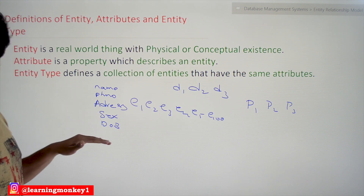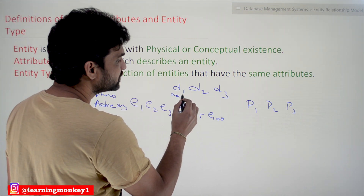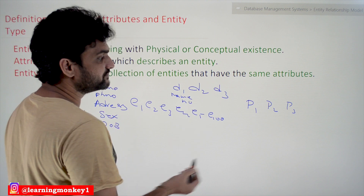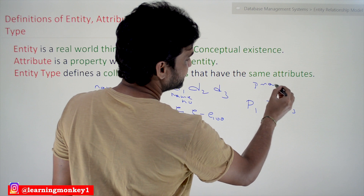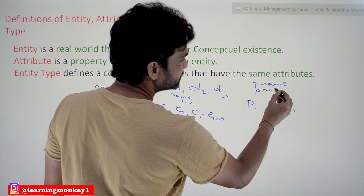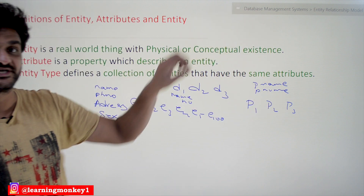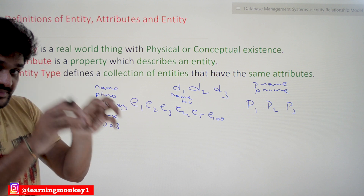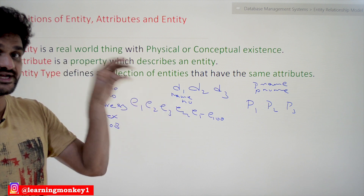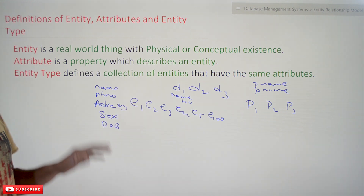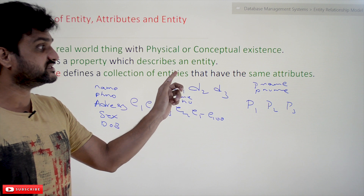Similarly, if you take department, its attributes are department name and department number. For project, the attributes are project name (P name) and project number (P number). These are all properties of projects. So, a property which describes an entity is what we call an attribute.